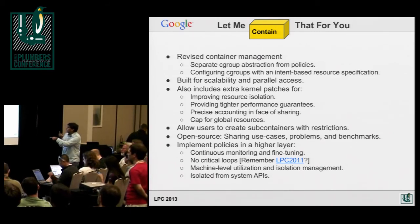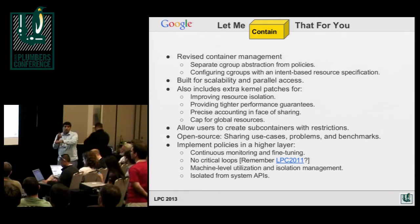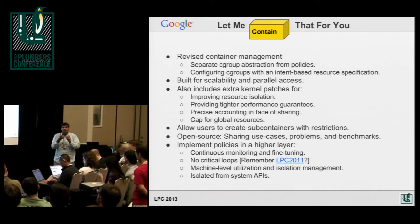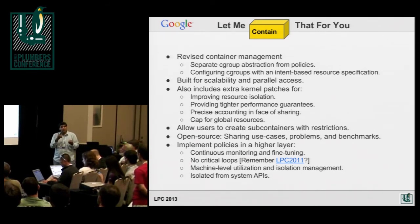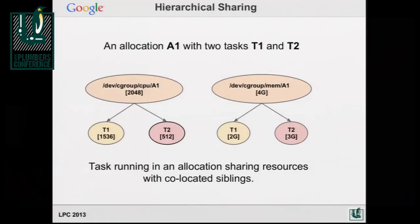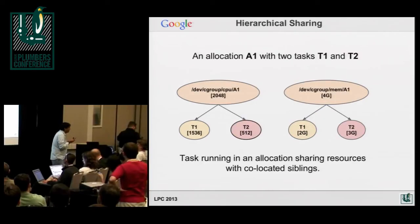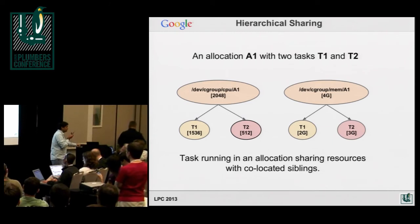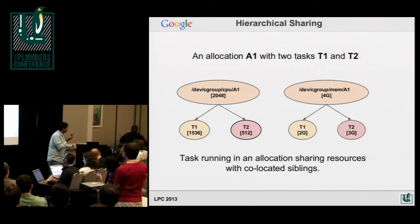We talked about container management at Google in 2011, where we discussed critical loops in user space that, if not run in time, could cause latency-sensitive jobs to suffer or even die. The kernel folks fixed a lot of those for us, and now we're in pretty good shape — that's no longer a problem. In terms of how much more upstream code we use now compared to Plumbers 2011 in Santa Rosa: we're no longer using fake NUMA — we're using memcg now, so a lot of that custom code is gone. We had a fun day deleting a lot of stuff.